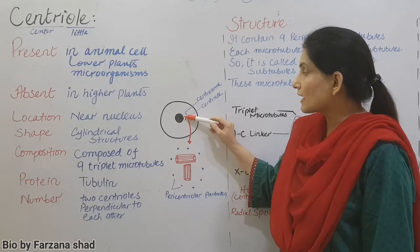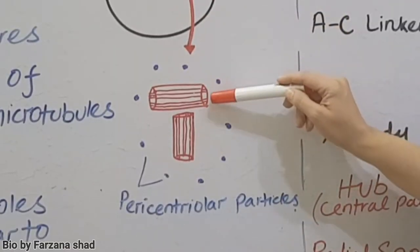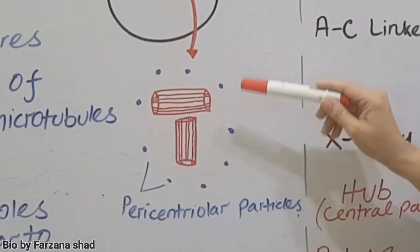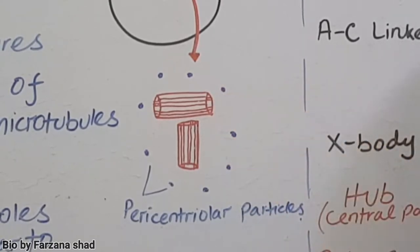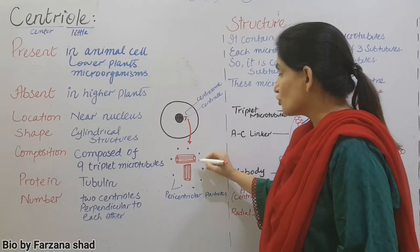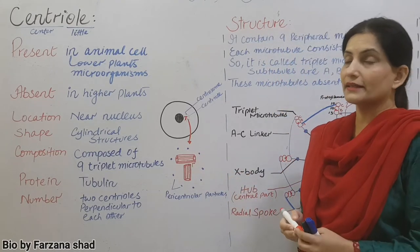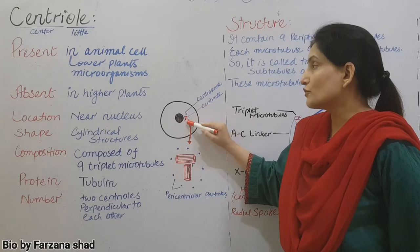If we enlarge these centrioles a little bit, you'll see what shape they appear. These are cylindrical in shape. You'll notice that these two centrioles are perpendicular to each other. The angle they make with each other is the right angle, ninety degree angle. See here, near the nucleus two centrioles are present.